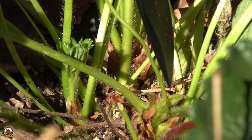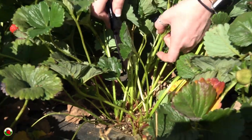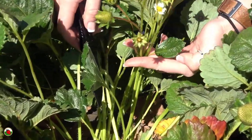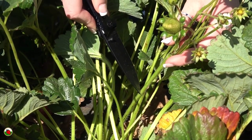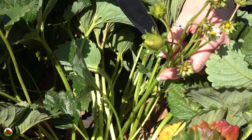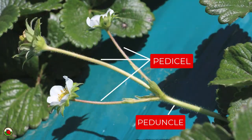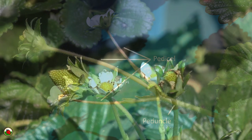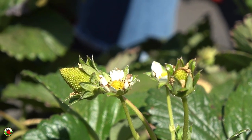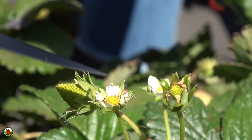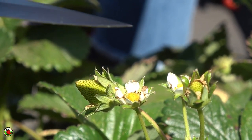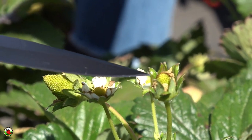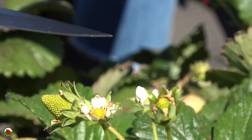Another stem connects flowers and fruit to the plant — that stem is called the peduncle. It's called a pedicel if it terminates with a flower or fruit. A single peduncle can have up to four pedicels and fruit. The first or primary fruit is the largest, the second is the secondary fruit and is smaller, and so on until the fourth or quaternary fruit.